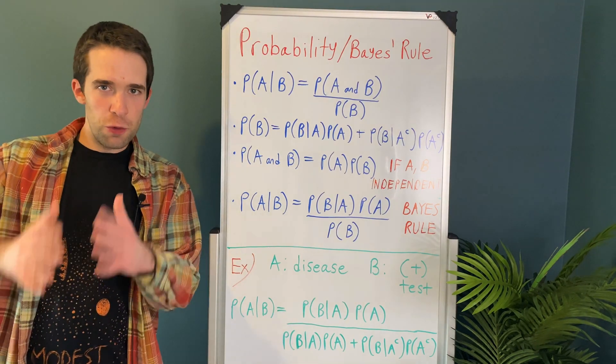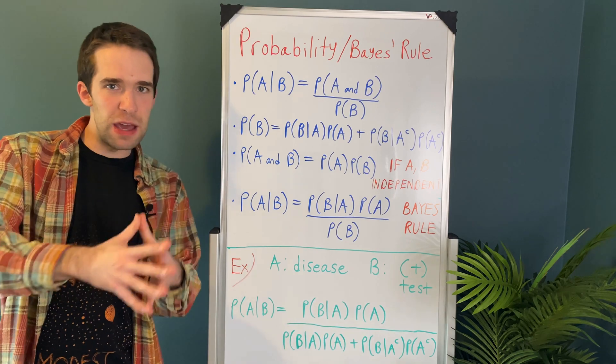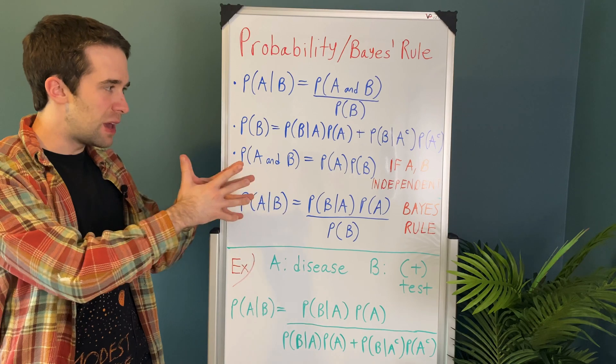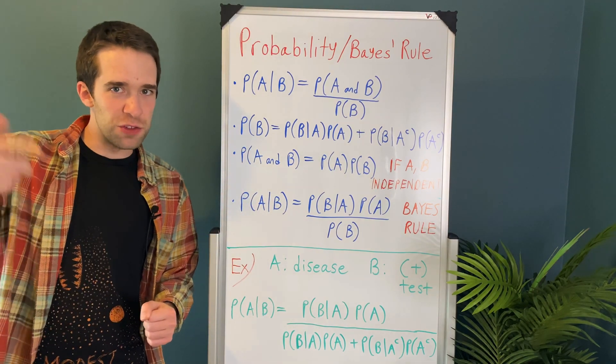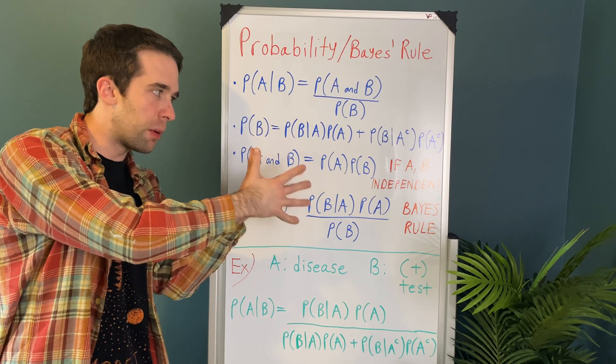One other super important probability rule takes place when the events A and B are independent of each other. When that's the case, probability of A and B is equal to the product of those individual probabilities. So just probability of A times the probability of B.